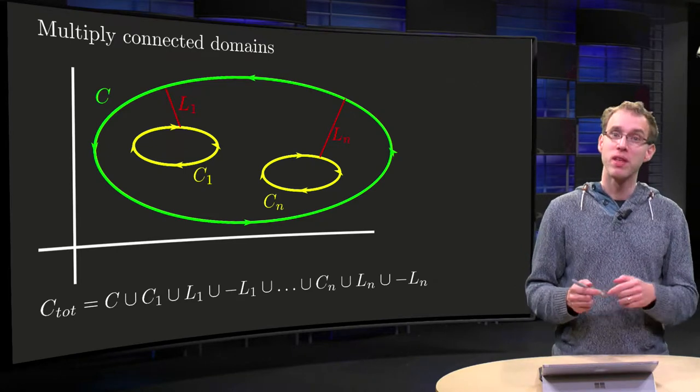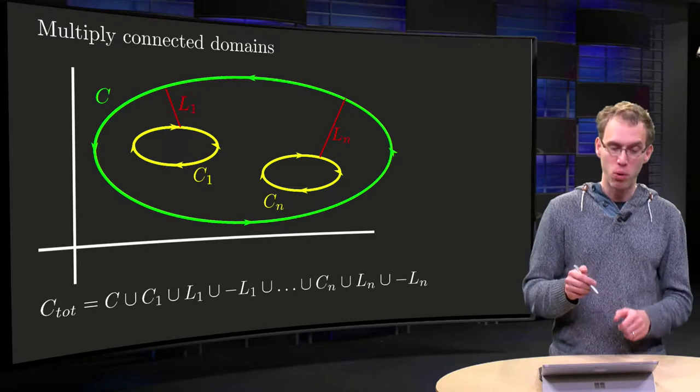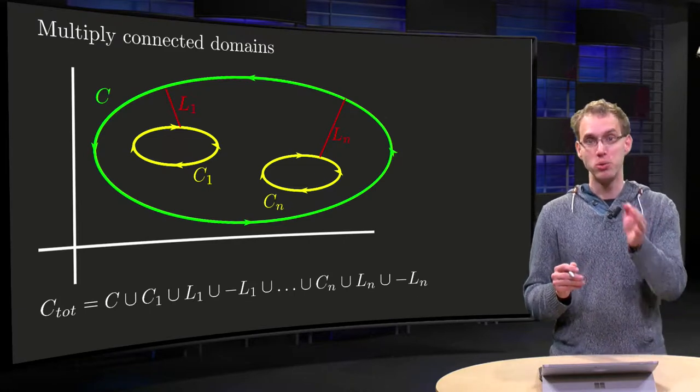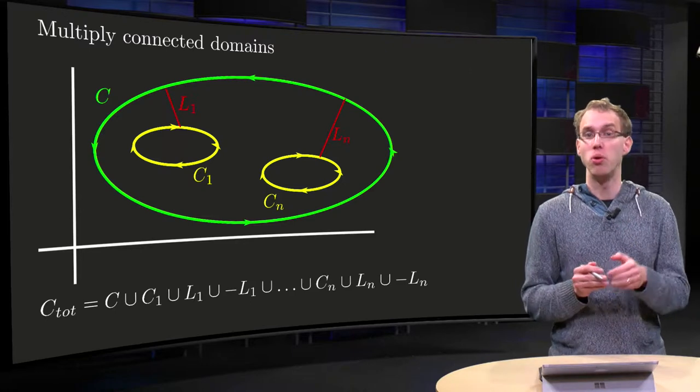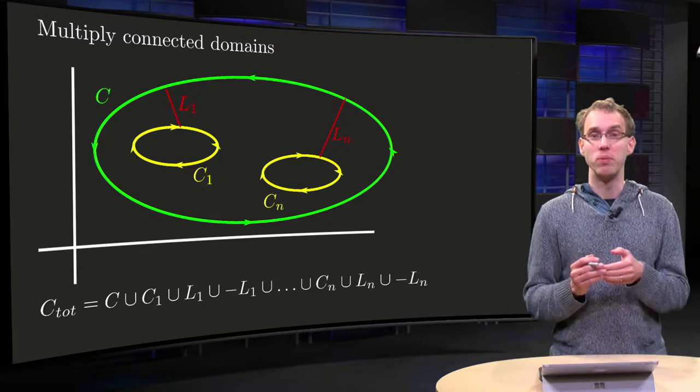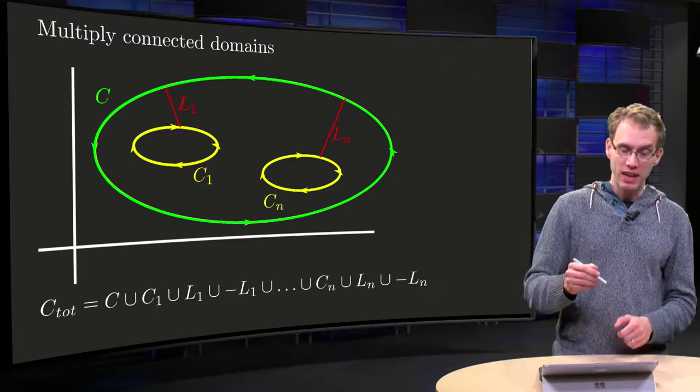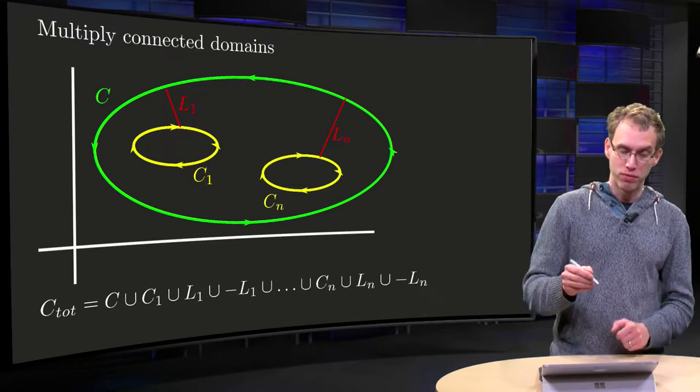So let's take an example. We have our contour c, it surrounds some holes given by c1, c2, c3 up to cn, and in this picture I drew only the first c1 and the last one cn. So what do we do? Well we also add l1, l2, l3 up to ln, and now we do the following: